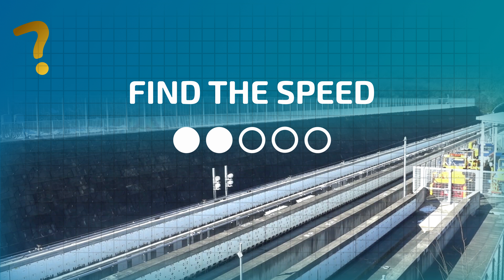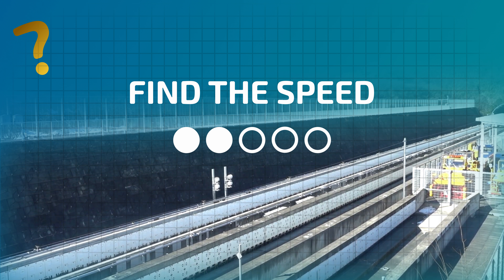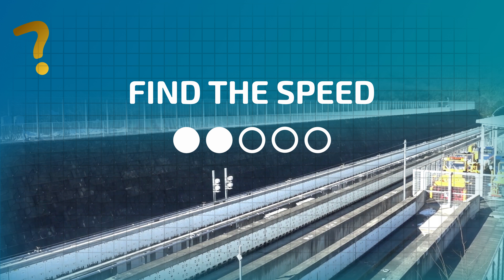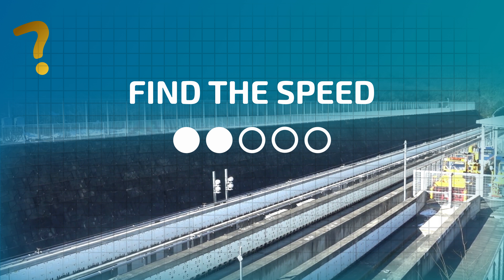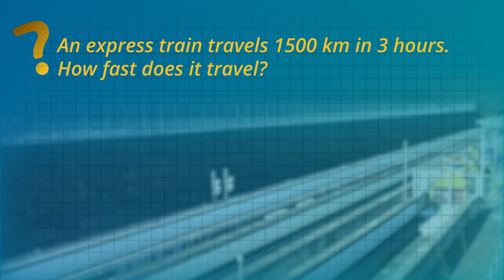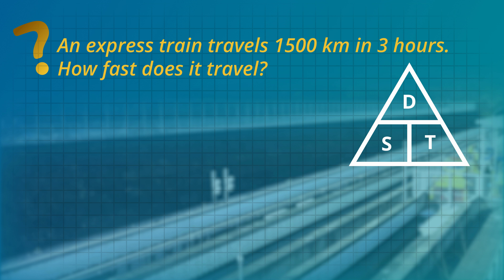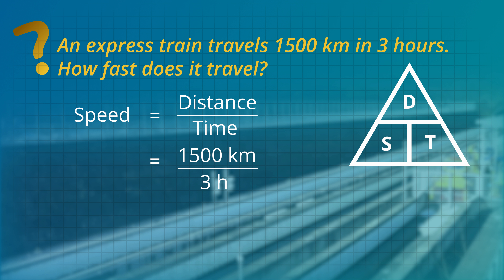In the second example let's find the speed. An express train travels 1500 kilometers in three hours. How fast does it travel? Speed equals distance over time. We know the distance is 1500 kilometers and we know the time is three hours. So the speed is a super fast 500 kilometers per hour.